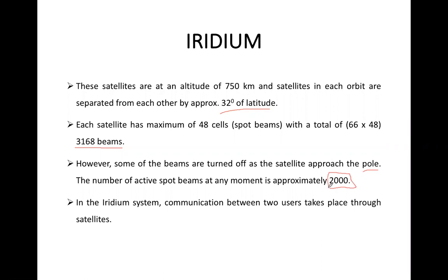So we have 66 satellites and each satellite has 48 beams, meaning 3,168 beams in total. But when a satellite approaches the pole, we turn off some of the beams, and nearly 2,000 beam stations are activated at any given moment.